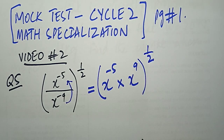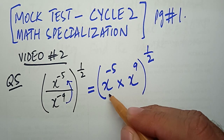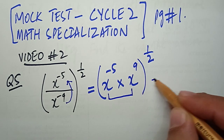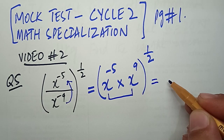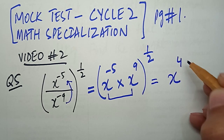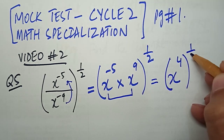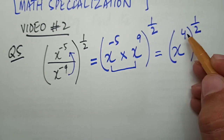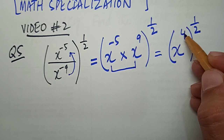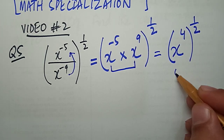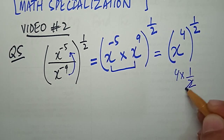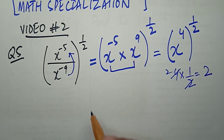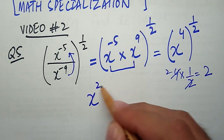Then we have a whole power of 1 upon 2. When we have the same base, we can add the powers — so X power minus 5 plus X power 9 equals X power 4, with a whole power of 1 upon 2. According to the rule of indices, we multiply power by power: 4 multiplied by 1 upon 2 equals 2. So the final answer is X power 2.